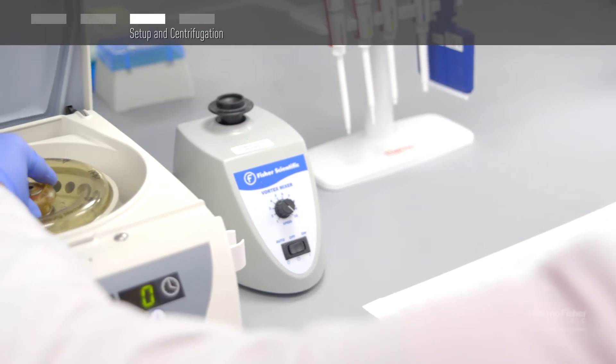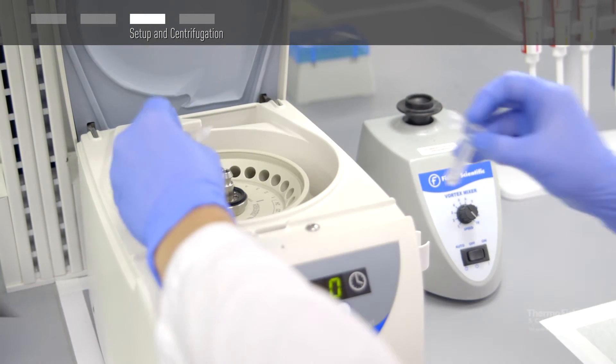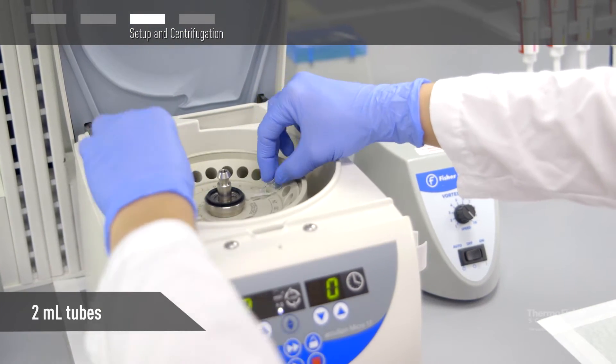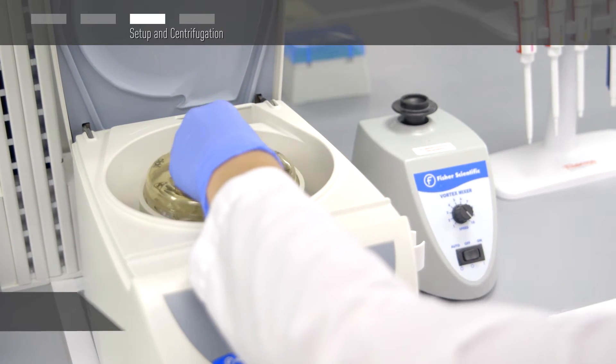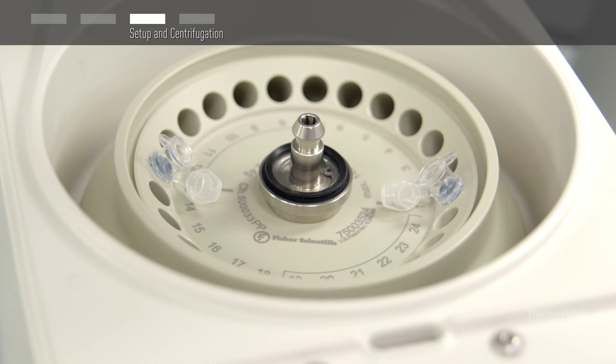Place the concentrator assembly into a microcentrifuge with a fixed angle rotor that accommodates two milliliter tubes. Always insert the device in the same orientation so that the printed window faces out and make sure that the concentrator has a proper counterbalance.